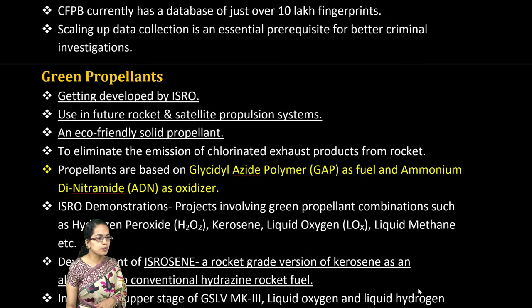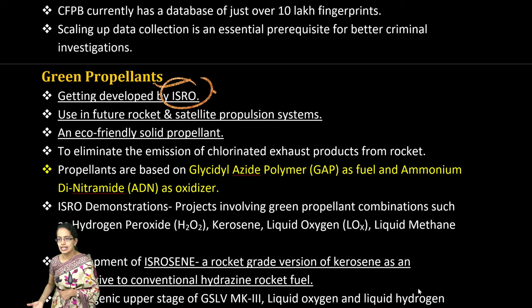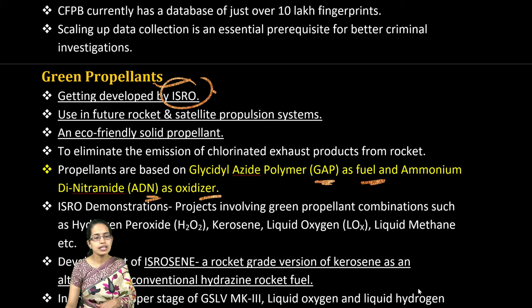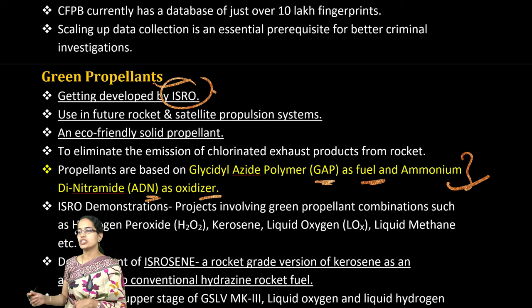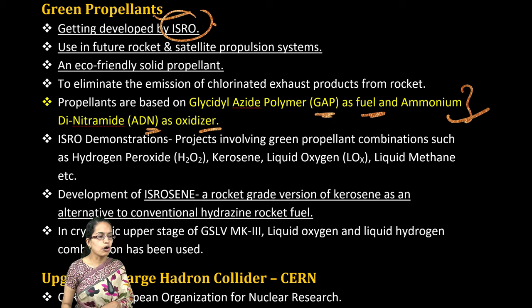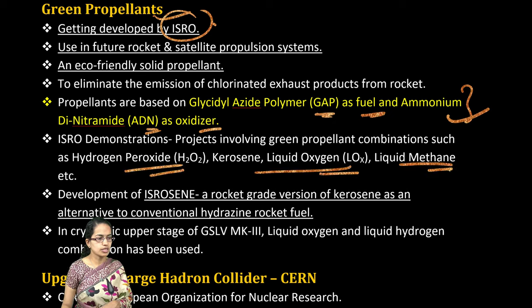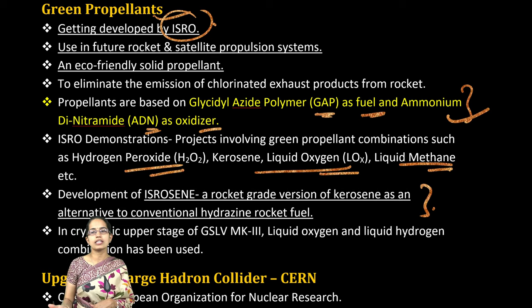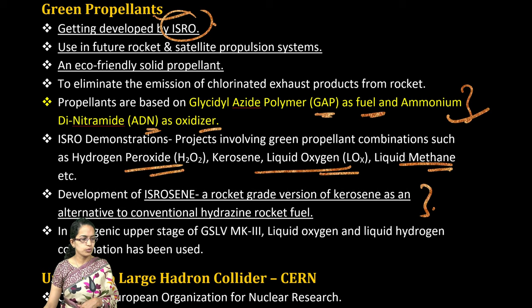The next is green propellants. ISRO has been developing these for rockets and satellites. The fuel is GAAP and the oxidizer is ADN — a direct question could be asked about which is the fuel and which is the oxidizer. There are also combinations of hydrogen peroxide, kerosene, liquid oxygen, and liquid methane. ISRO-EEN, as the name suggests, is a rocket-grade version of kerosene and is an alternative to hydrazine, which is the current rocket fuel.